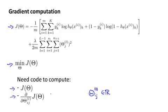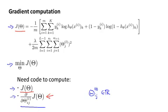That's a real number. And so these are the partial derivative terms we need to compute. In order to compute the cost function J of theta, we just use this formula up here. And so what I want to do for most of this video is focus on talking about how we can compute these partial derivative terms.